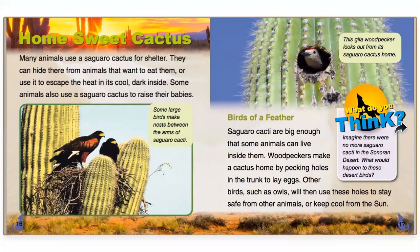Home sweet cactus — this is why this big cactus is a great example of an ecosystem. Many animals use a saguaro cactus for shelter. They can hide there from animals that want to eat them, or use it to escape the heat since it's cool and dark inside. Some animals use a saguaro cactus to raise their babies — you can see a great picture of the nest. Illustrations are very important here because we can see birds making their nest, making their home in this huge large cactus. Woodpeckers make a cactus home by pecking holes in the trunk to lay eggs, and other birds such as owls then use these holes to stay safe from other animals or keep cool from the sun.